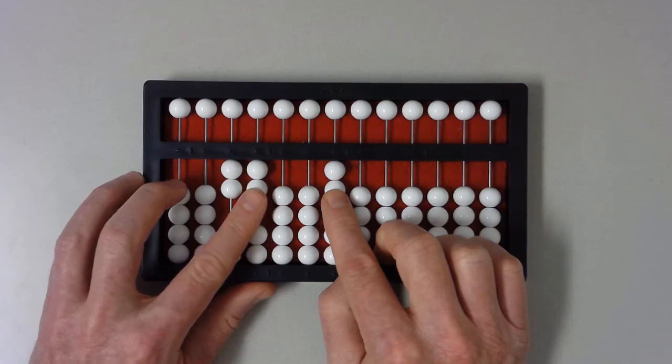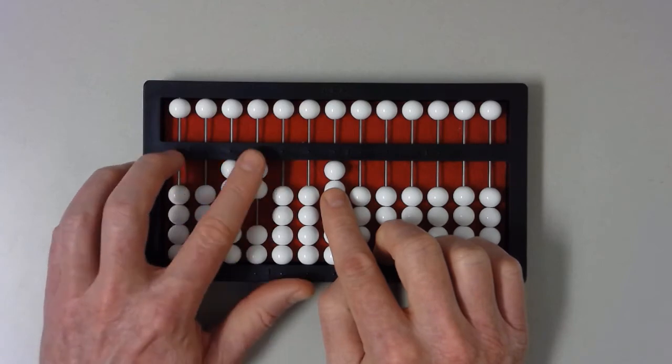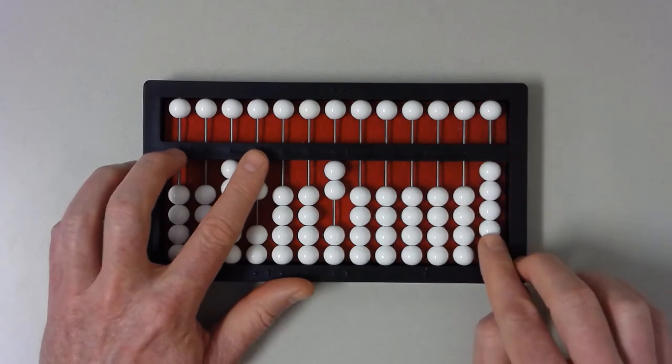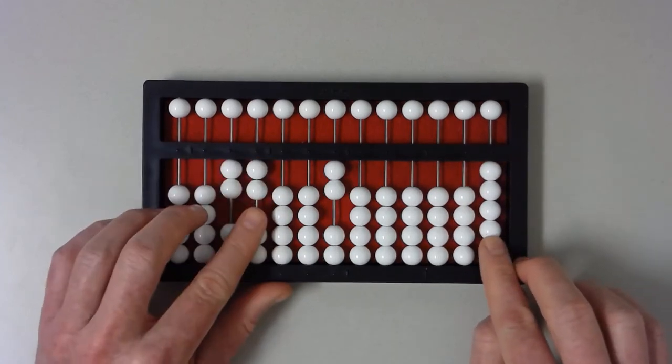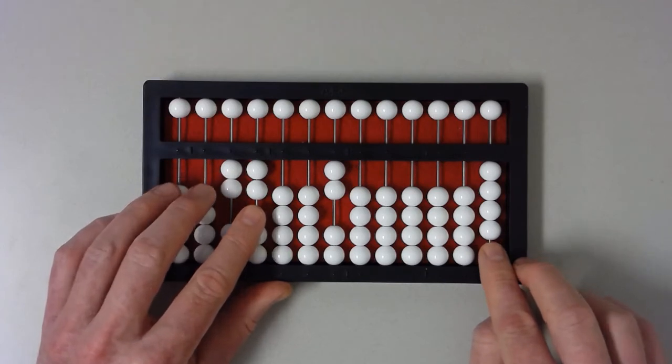We start with the smallest unit or amount. That would be the two in the ones column of twenty-two, and multiply that two by the two that is the multiplier. We know that two times two equals four. Set four in the units column of the hundreds section. The hundreds section is also known as the units section.